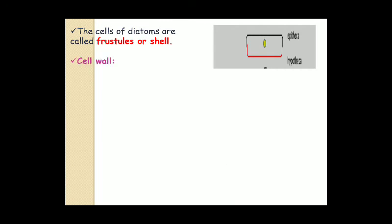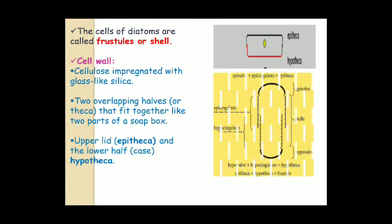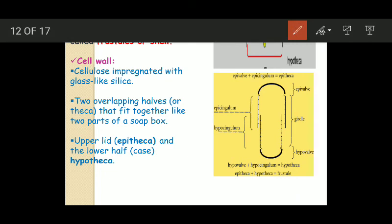Now the structure of their cells and cell wall. The cells of diatoms are called frustules or shells. Their cell wall, besides cellulose, contains glass-like silica. This cell wall is constructed of two overlapping halves, the upper one and the lower one, that fit together like the two parts of a soap box. The upper one is known as epitheca and the lower one is known as hypotheca.